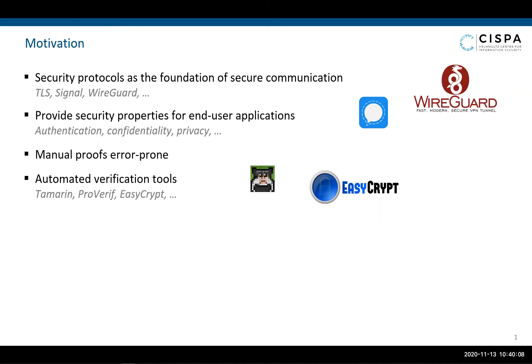In today's interconnected world, security protocols such as TLS, Signal and WireGuard form the basis of secure communication. Such protocols aim to provide a communication channel with specific security properties like authentication, confidentiality and privacy for end-user applications. The design of these protocols involves proofs that justify their security properties. These proofs are often carried out manually, but due to their complexity, mistakes are regularly discovered. This has motivated the development of automatic verification tools like Tamarin, Proverif and EasyCrypt.